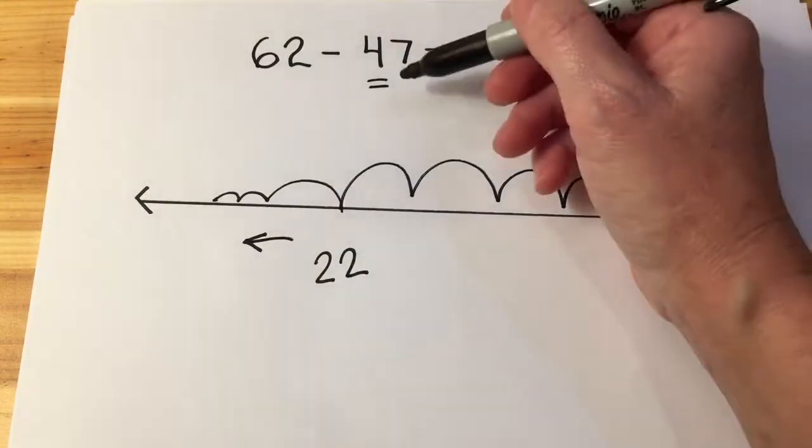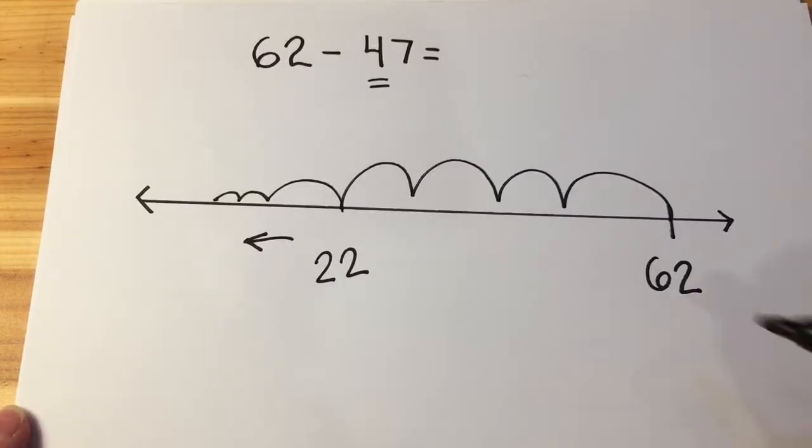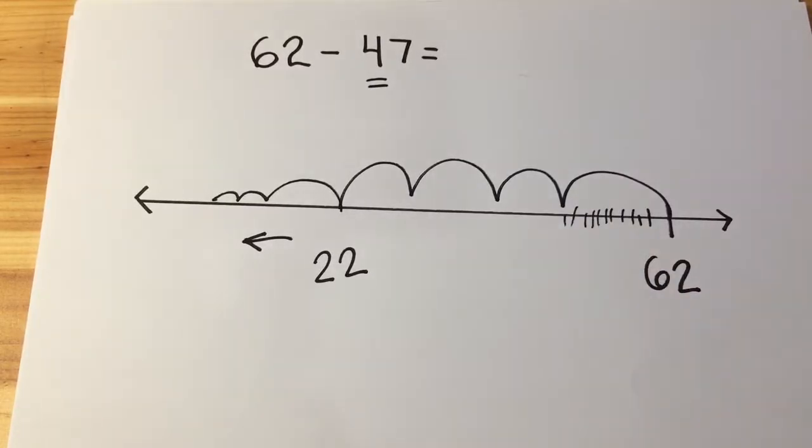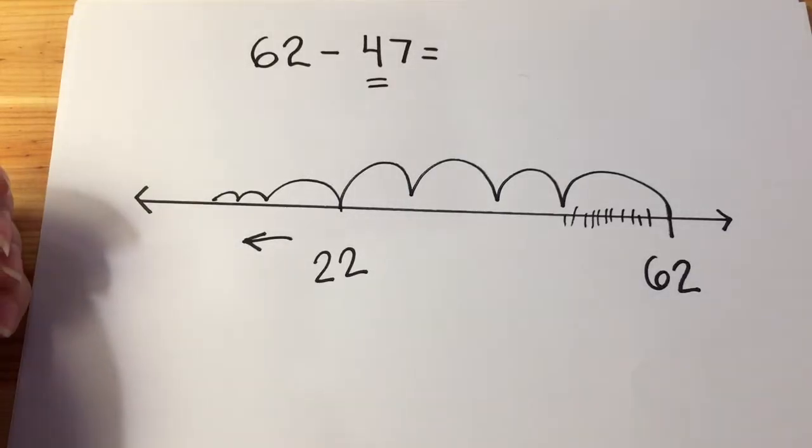This way, I don't have to count 47 steps back. I don't have to try to put in all the little pieces in between, which is just an opportunity to make some kind of mistake somewhere along the way.